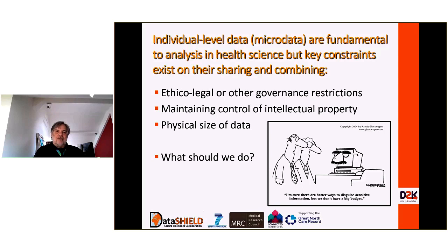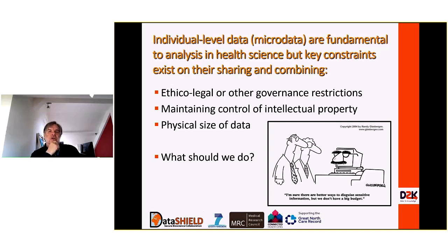Micro data are absolutely fundamental to analysis in health and social science, but there are key constraints on sharing individual-level data. In general there are three broad reasons why you can't freely share individual-level data. The first is ethical, legal, or other governance restrictions. For example, Public Health England data is very carefully monitored from a governance perspective — you're simply not allowed to pass out individual-level data outside PHE. Some nations won't allow individual-level data to leave their country. Also, research data access committees, even when they ultimately accept most applications, can take a considerable time to process them.